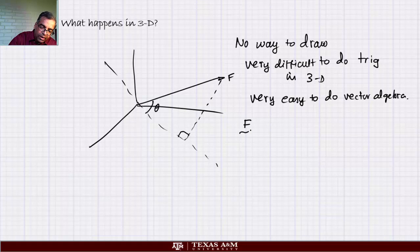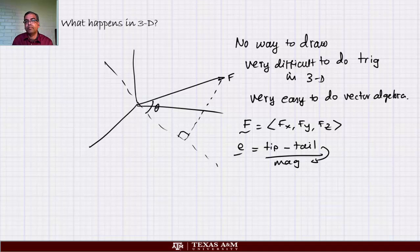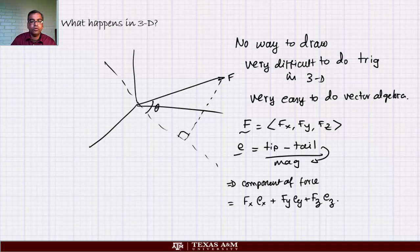Vector algebra is your brain's eye. That's how your brain looks at vectors in 3D when you cannot really see it. The way we do it is: now we have F, we calculate Fx, Fy, Fz. E vector is again tip minus tail divided by its magnitude. Then component of force equals Fx Ex plus Fy Ey plus Fz Ez. Notice, beautiful and easy.